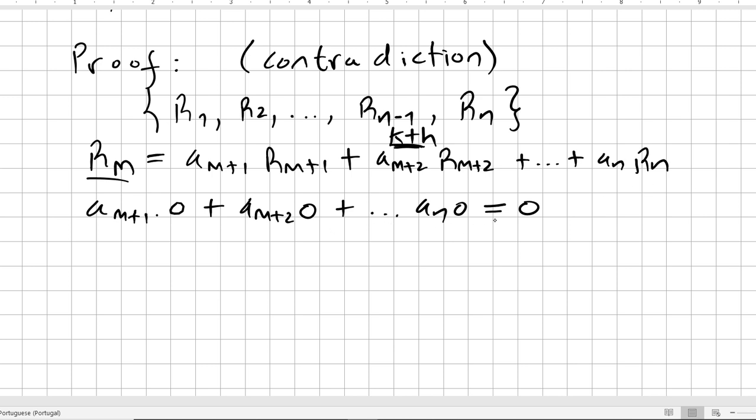The Kth component of Rm is the first non-zero entry, right? And since the matrix is in echelon form, the Kth components of Rm+1, etc. will be all zero. So it will be written this way.